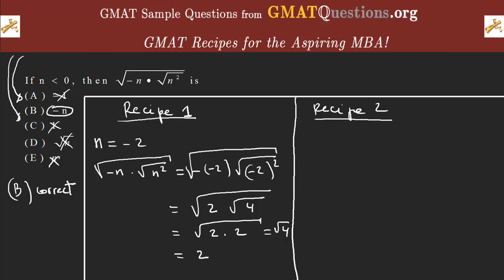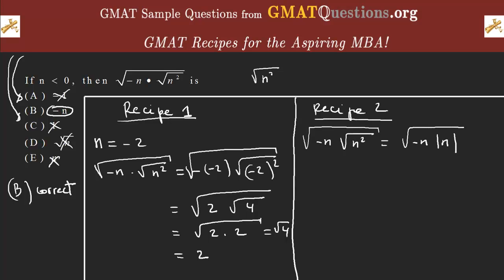That's a good, simple way of doing the question that most of you will understand. Now let's do it the mathematical way — a more sophisticated approach. This requires you to know the definition of the square root. I'll write the whole expression again and note that this equals negative n. The definition of the root of n squared is the absolute value of n.